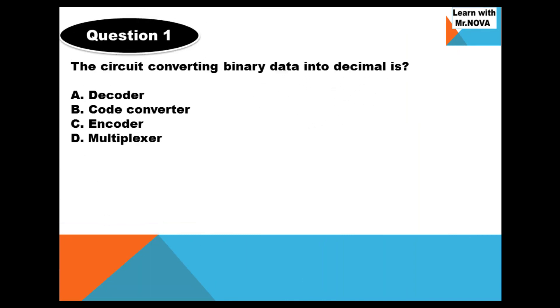Question 1. The circuit converting binary data into decimal is called: A. Decoder, B. Code Converter, C. Encoder, D. Multiplexer. 5 seconds to answer this question.